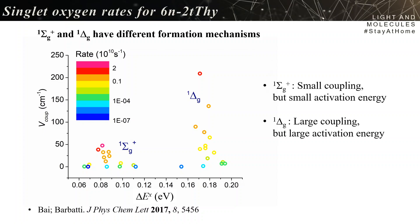The sigma formation works with small couplings but small activation energy to compensate. While the delta formation works with a large coupling and a large activation energy. And then you have the two being formed in this way.